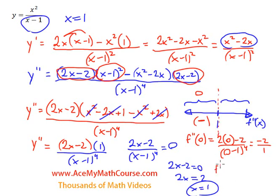What about f double prime of, let's use maybe 2. So that would be 2 times 2 minus 2 over 2 minus 1 to the 4. 2 times 2, 4 minus 2, 2. Then 2 minus 1, 1 to the 4, 1. So we got a positive value here. So it's concave up over here. Concave up and concave down.